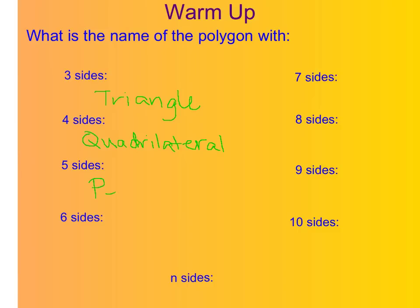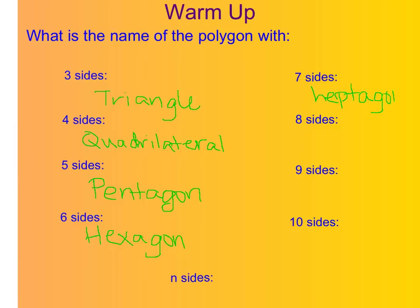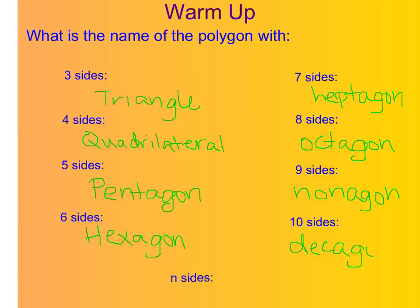Five sides is called a pentagon, just like the political building, the Pentagon. Six sides is a hexagon. Seven sides is a heptagon. Eight sides, like an octopus, we have an octagon. Nine sides is called a nonagon. And ten sides is a decagon — kind of like a decade is ten years.